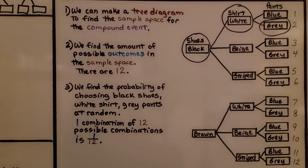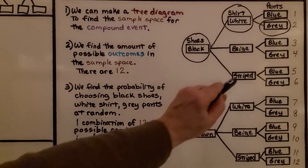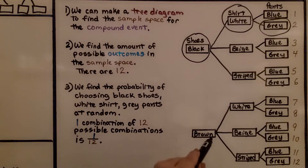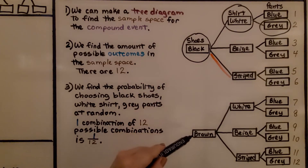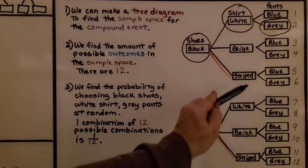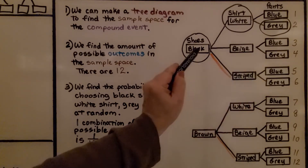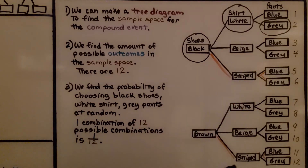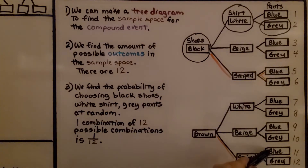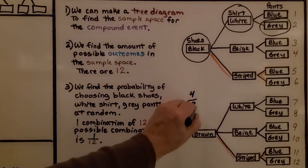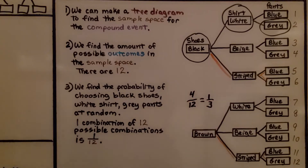What's the probability he'd choose the striped shirt? We look at the striped shirt with either the black shoes or the brown shoes. From black shoes to striped shirt, he has the choice of blue or gray pants. From brown shoes to striped shirt, he also has blue or gray pants. That gives us four outcomes for the striped shirt — two for black shoes and two for brown shoes — so the probability is four out of 12, or one third.